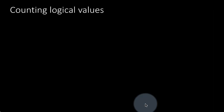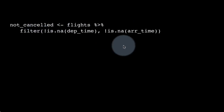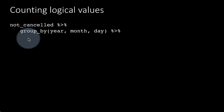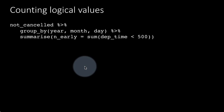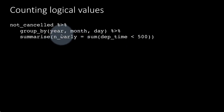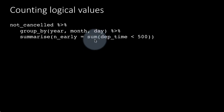Now taking an example from the flights table using the not_cancelled data frame, we group by year, month, and day. We define an early flight as any departure time before 5 a.m. (dep_time < 500). Then n_early = sum(dep_time < 500) — since the condition is TRUE or FALSE for every flight, summing it gives the count of early flights per day.